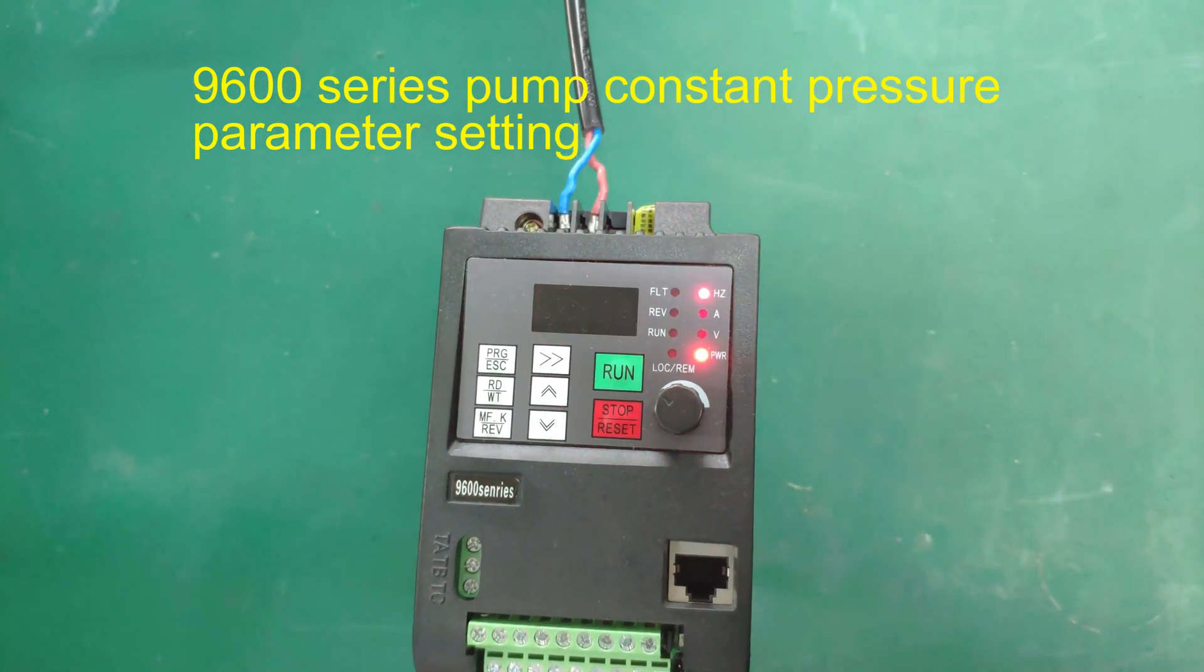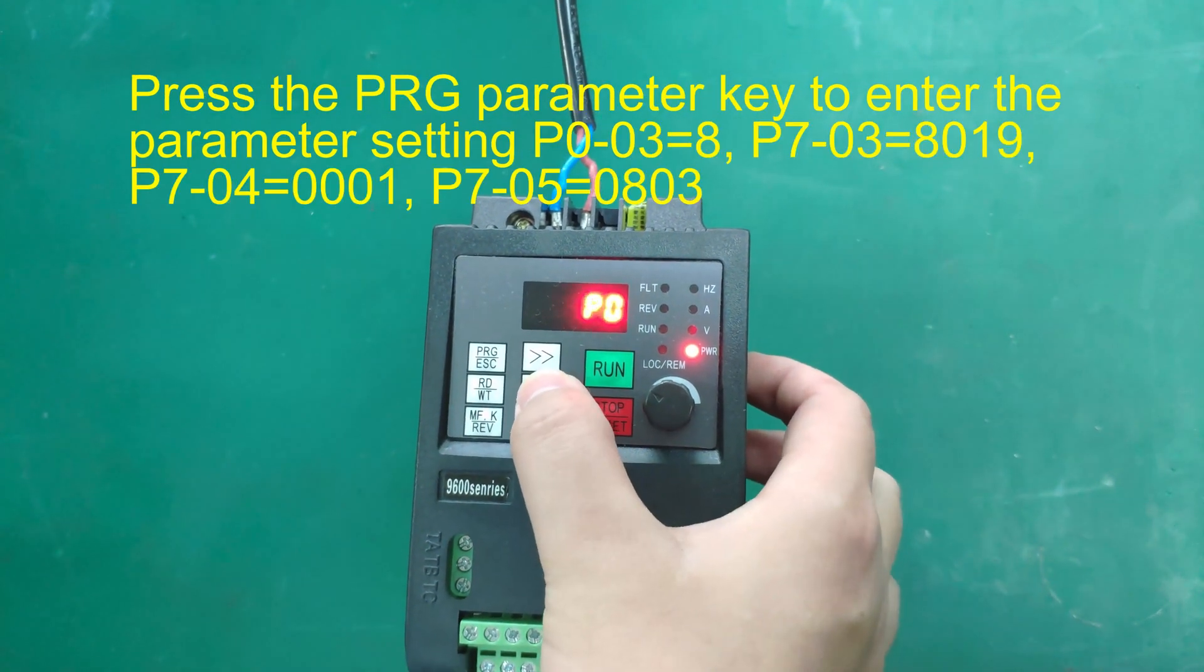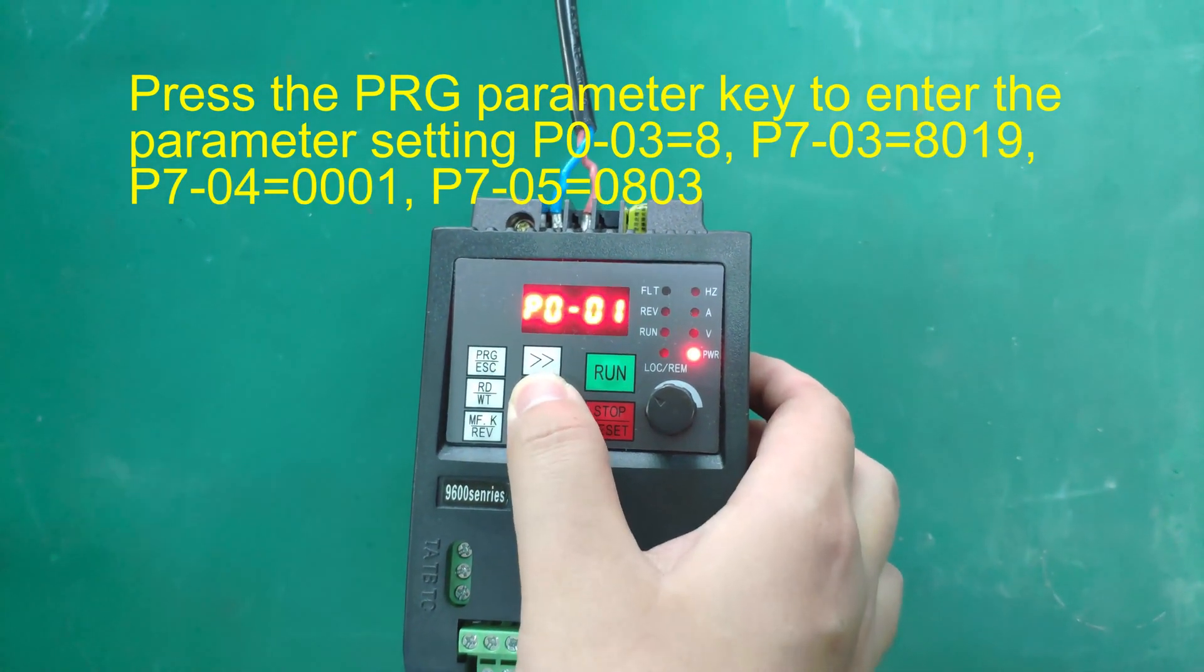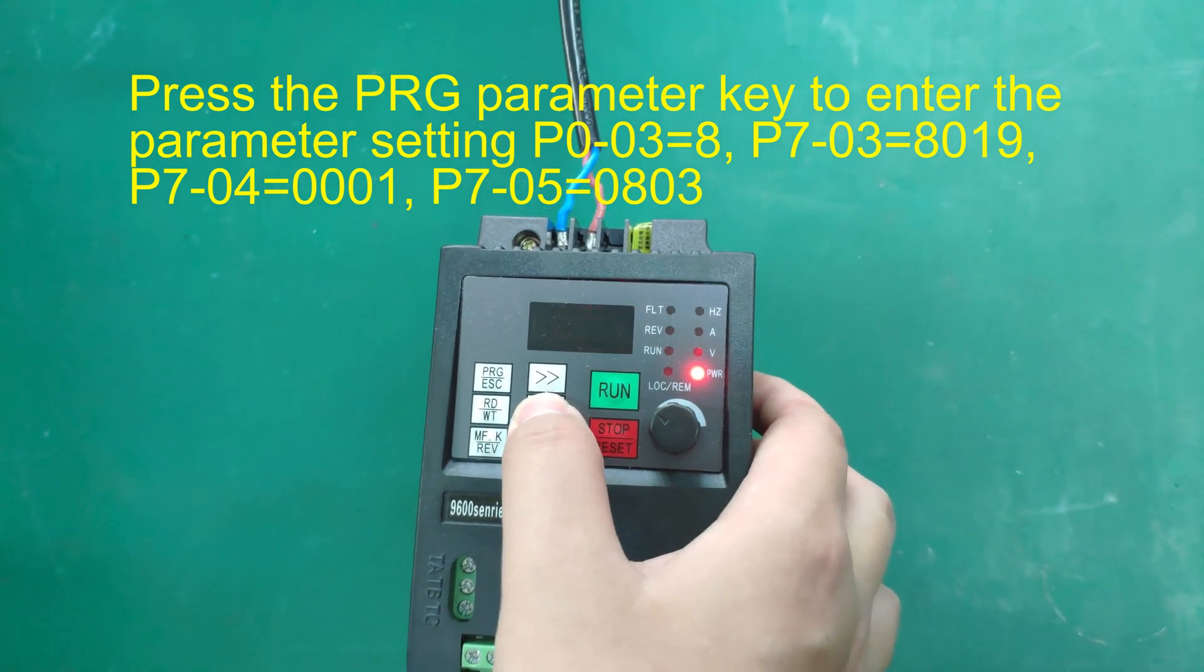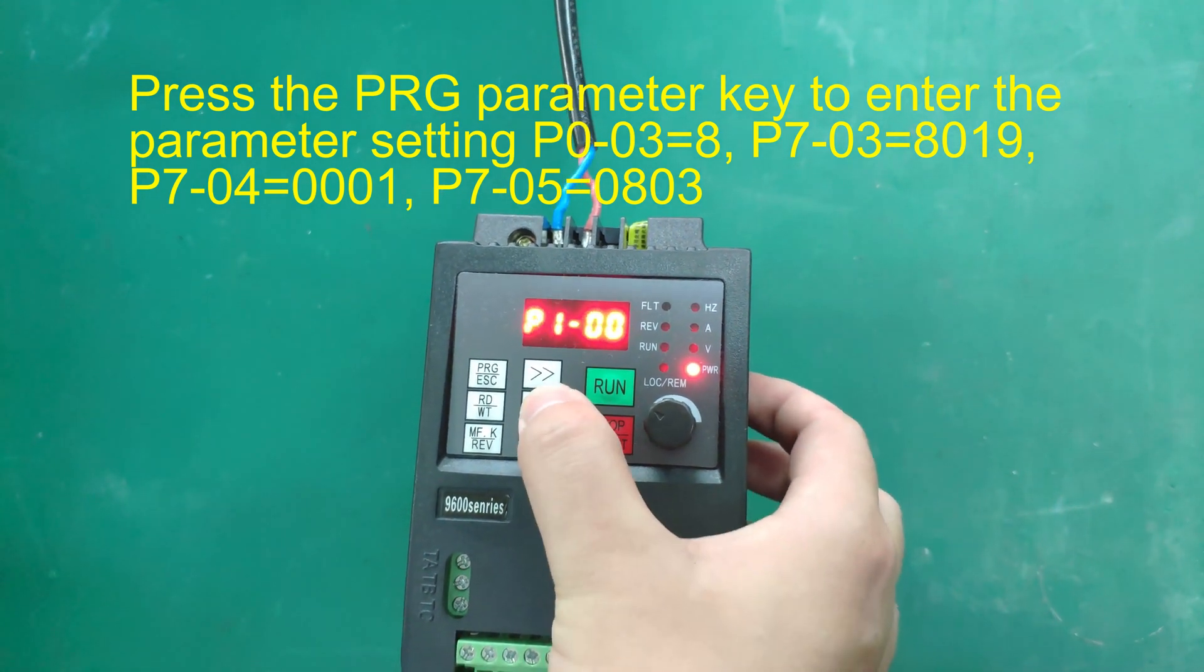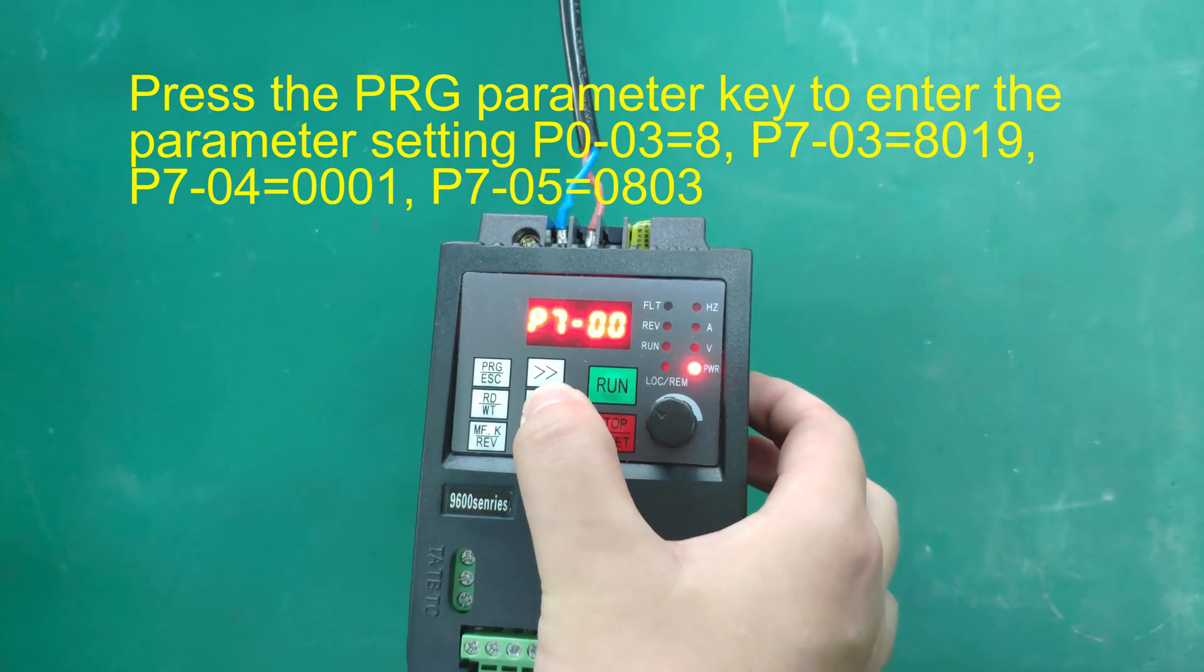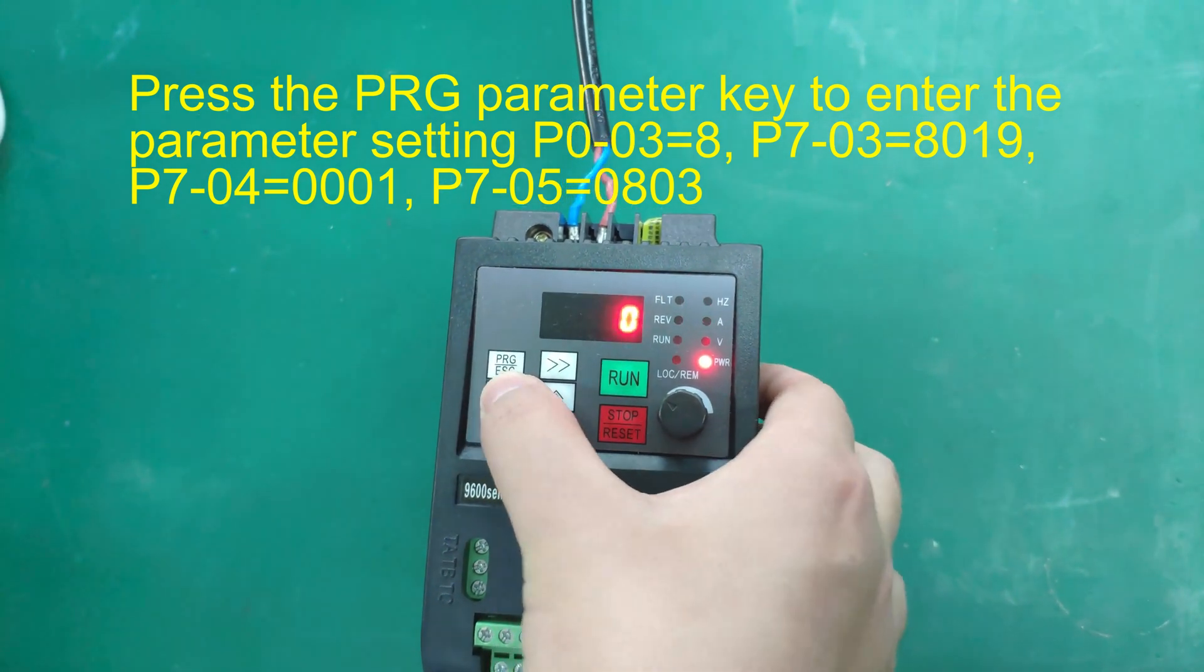9600 Series Pump, Constant Pressure Parameter setting. Press the PRG parameter key to enter the parameter setting: P0-03=8, P7-03=8019, P7-04=0001, P7-05=0803.